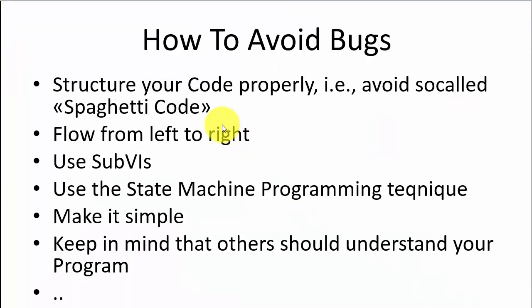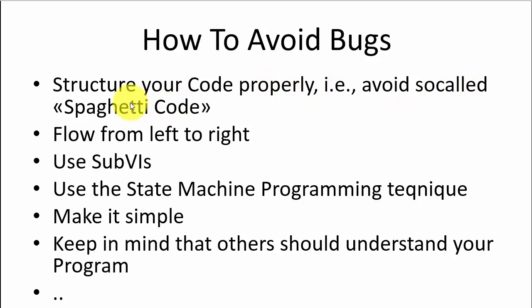It's almost impossible to avoid bugs in your program, but here are some techniques you should try to follow in order to at least try to avoid as many bugs as possible. Always structure your code properly and avoid so-called spaghetti code — I will show an example later. Always make sure the flows go from left to right; don't wire from right to left in your program.